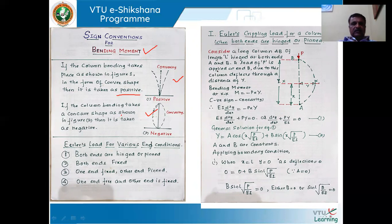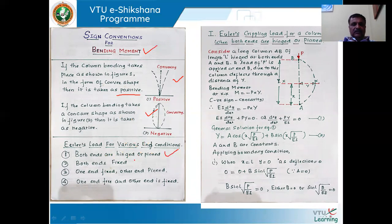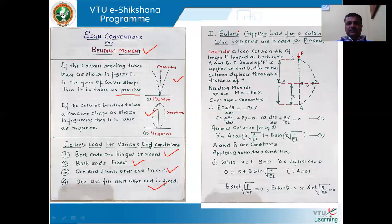Euler derived equations for the safe buckling load, or critical load, for four different conditions: one, both ends hinged or pinned; second, both ends fixed; third, one end fixed and other end pinned; and fourth, one end free and the other end fixed. Let us see each case and how the equation for critical load is derived. The Euler's crippling load is the critical load for a column when both ends are hinged or pinned.